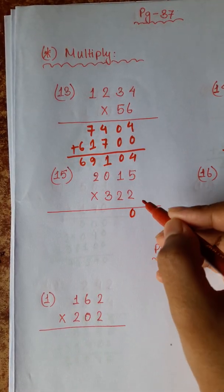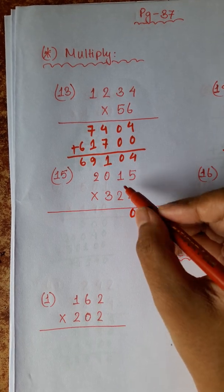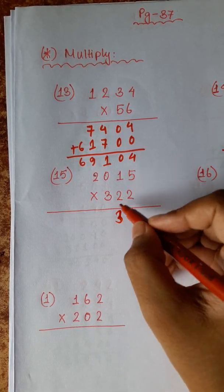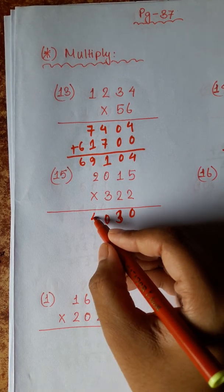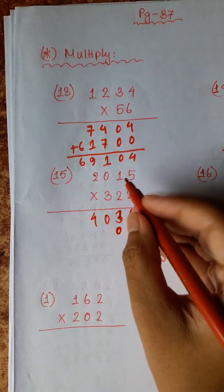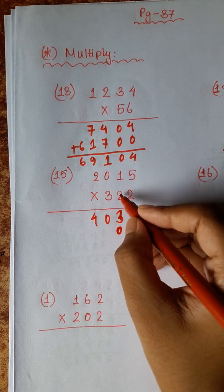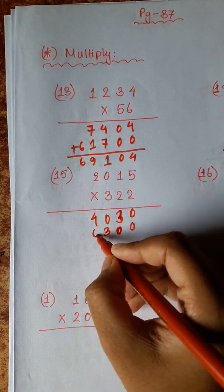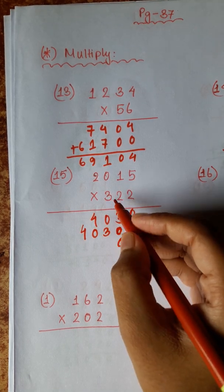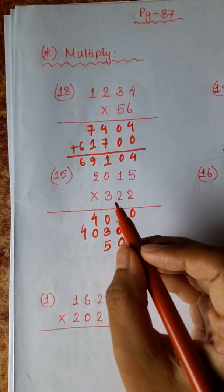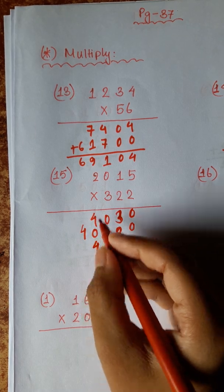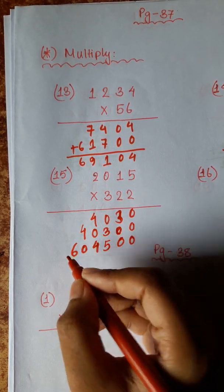5 twos are 10 — that's 0 carry 1. 2 ones are 2 plus 1 is 3. 2 zeros are 0, 2 twos are 4. 5 twos are 10 — 0 carry 1. 2 ones are 2 plus 1 is 3. 2 zeros are 0, 2 twos are 4. 5 threes are 15 — 5 carry 1. 3 ones are 3 plus 1 is 4. 3 zeros are 0, 3 twos are 6.